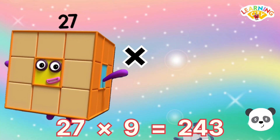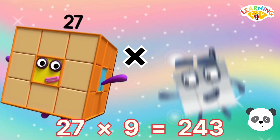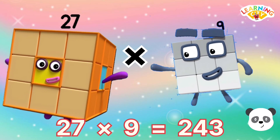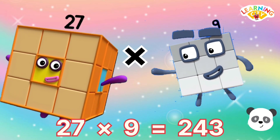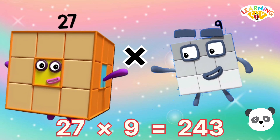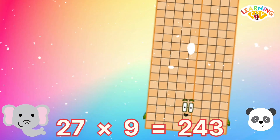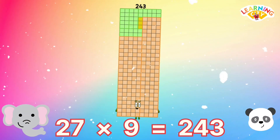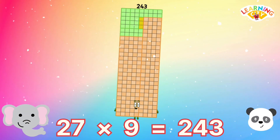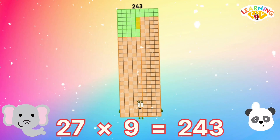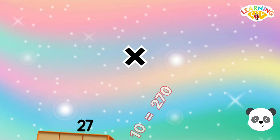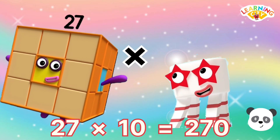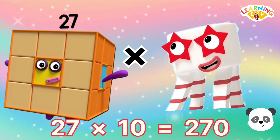27 multiply 9 equals 243. 27 multiply 10 equals 270.